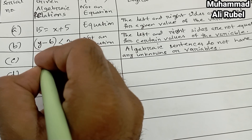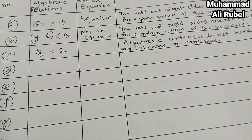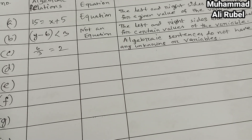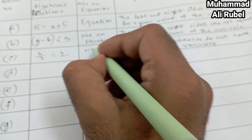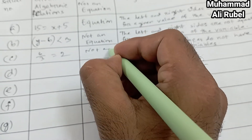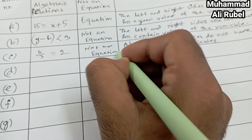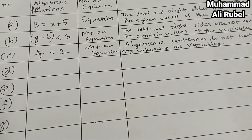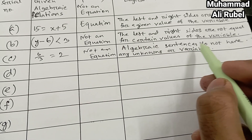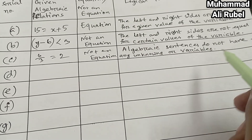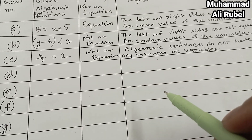Item c: 6 over 3 equal 2. It is not an equation. Logical reason: algebraic sentences do not have any unknowns or variables.